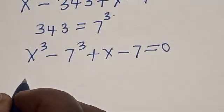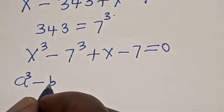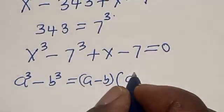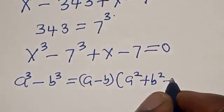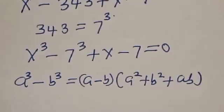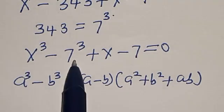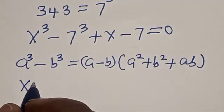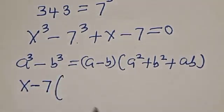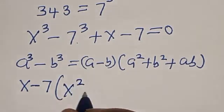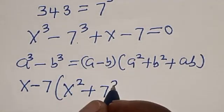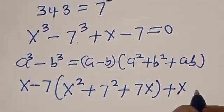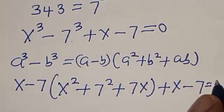Remember the identity: a cube minus b cube equals a minus b, multiplied by a squared plus ab plus b squared. In this case a is s and b is 7, so we have s minus 7 times s squared plus 7s plus 49, plus s minus 7, is equal to 0.